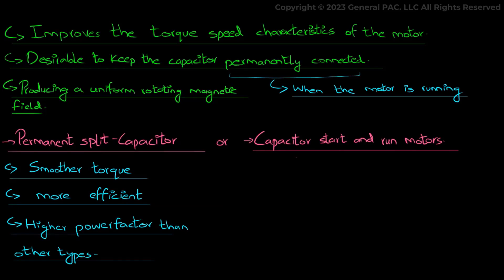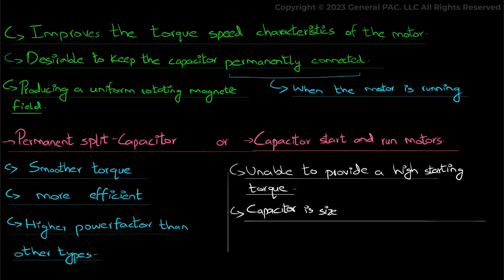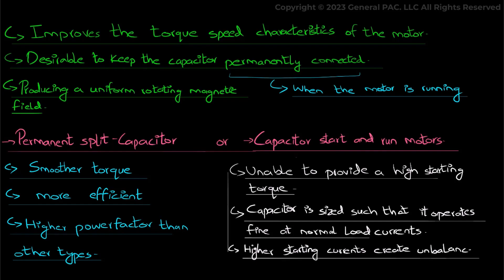However, a permanent split capacitor motors are unable to provide a high starting torque because the capacitor is sized such that it operates fine at the normal load currents while higher starting currents create unbalance among the phases.